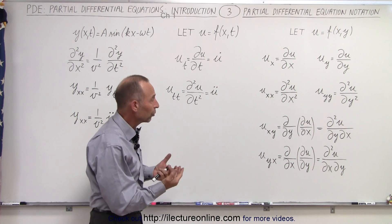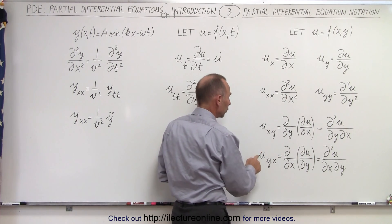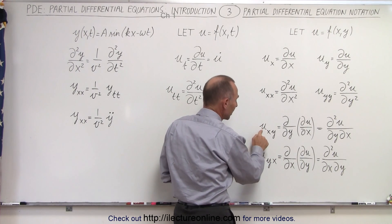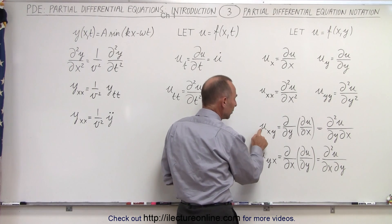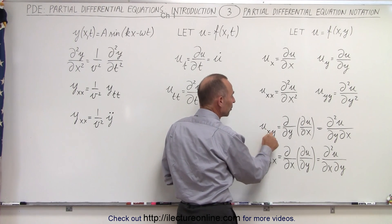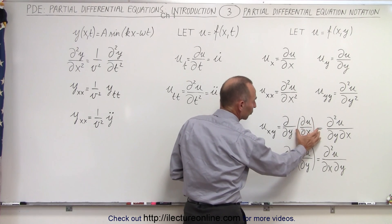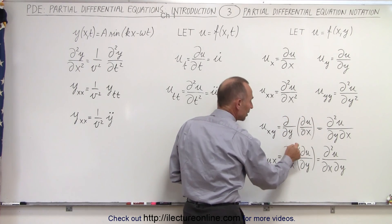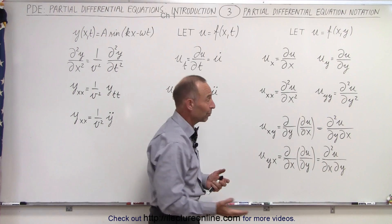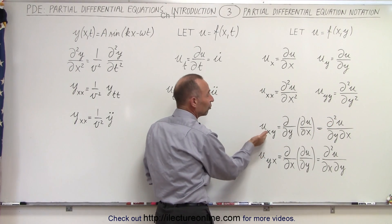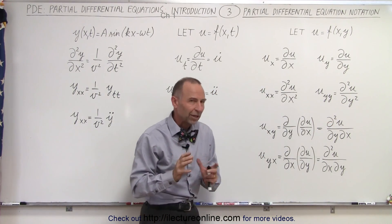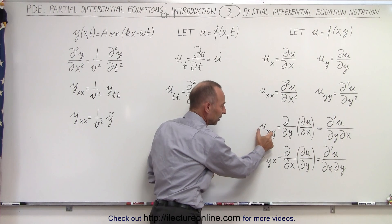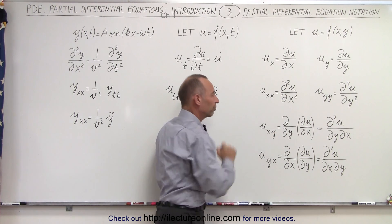We could also have something like u sub xy or u sub yx. The order here is important. U sub xy means we first take the partial derivative of u with respect to x, and then we take the partial derivative of that result with respect to y, which can be written in the longer notation as shown. So first we take the partial derivative of u with respect to x, and after that we take the partial derivative of what we have with respect to y.